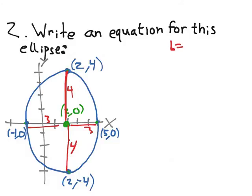So that means b is equal to 4. Actually, b is equal to 3, a is equal to 4, because a has to be the bigger one. And the center, I already know, is (2, 0).